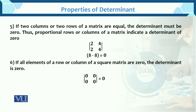Property number 5: if two columns or two rows of a matrix are equal, the determinant must be zero. Proportional rows or columns of a matrix also indicate a determinant of zero. So if two rows or two columns have equal values, the determinant will be zero.